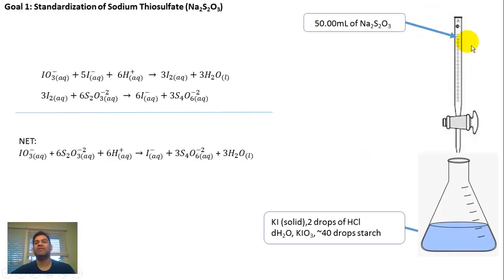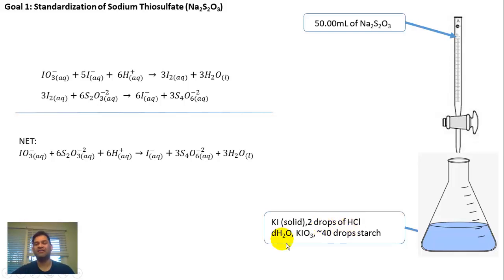Let's talk about the standardization of sodium thiosulfate. You're adding the KIO3, which will react with the KI. The potassium K is a counterion, so we're not going to worry about it. Adding two drops of strong acid HCl — the Cl is a counterion; HCl acidifies it — along with some water and then the starch. The IO3- will react with the I- along with the acid to give you I2.